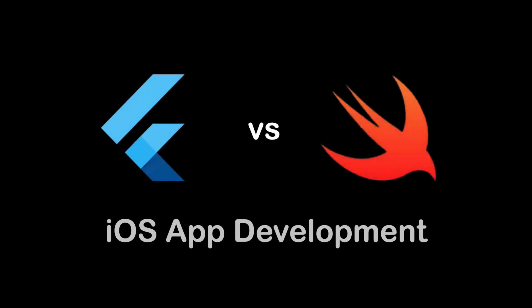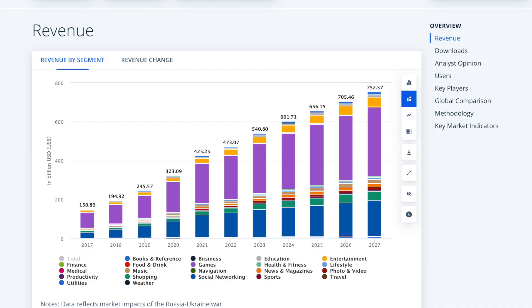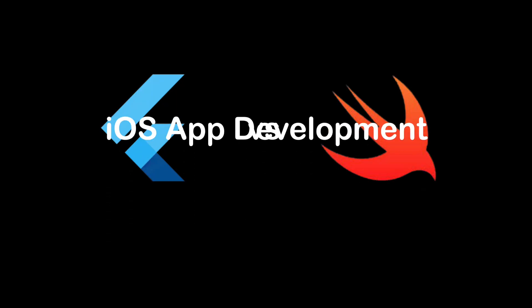In this video we're going to talk about Flutter versus Swift in iOS app development. According to Statista, the app market worldwide is projected to reach 750 billion by 2027, which projects a significant growth graph in the days to come. With this data we can be assured that the mobile application development market is not going down anytime soon, and so does iOS application development.